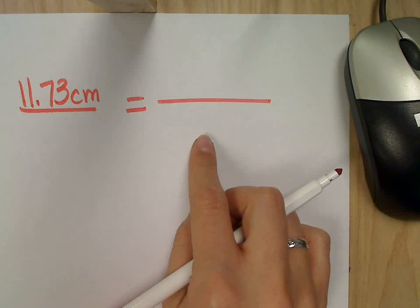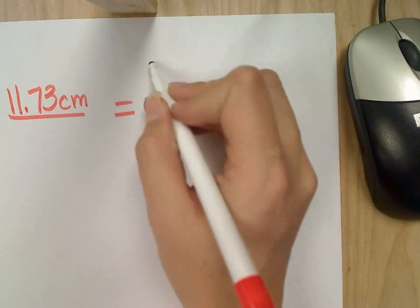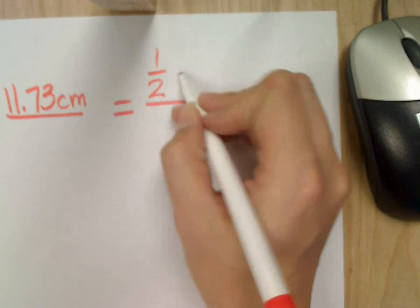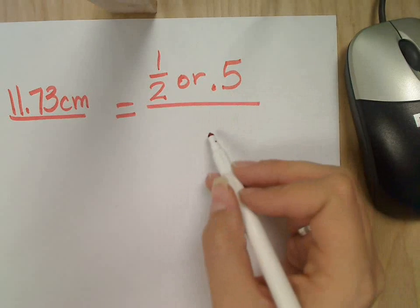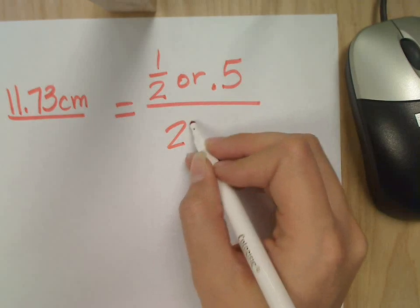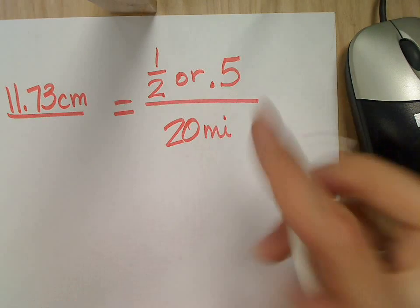And then my second ratio? Half. Sure, I could put half if I wanted to, or I could put 0.5 because they're equivalent, over what? 20 miles. 20 miles. Okay, so miles are along the bottom, centimeters are along the top.